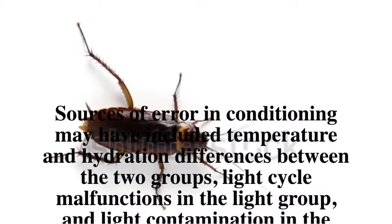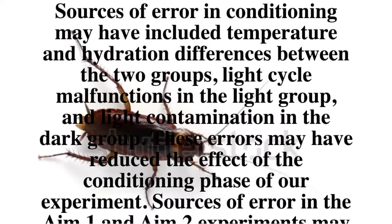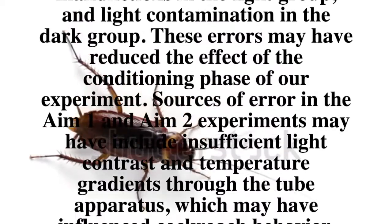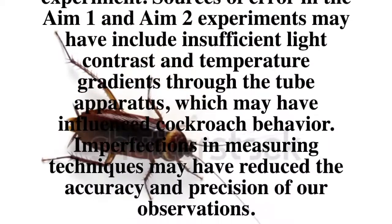Sources of error in Aim 1 and Aim 2 experiments may have included insufficient light contrast and temperature gradients through the tube apparatus, which may have influenced cockroach behavior. Imperfections in the measuring techniques may have reduced the accuracy and precision of our observations.